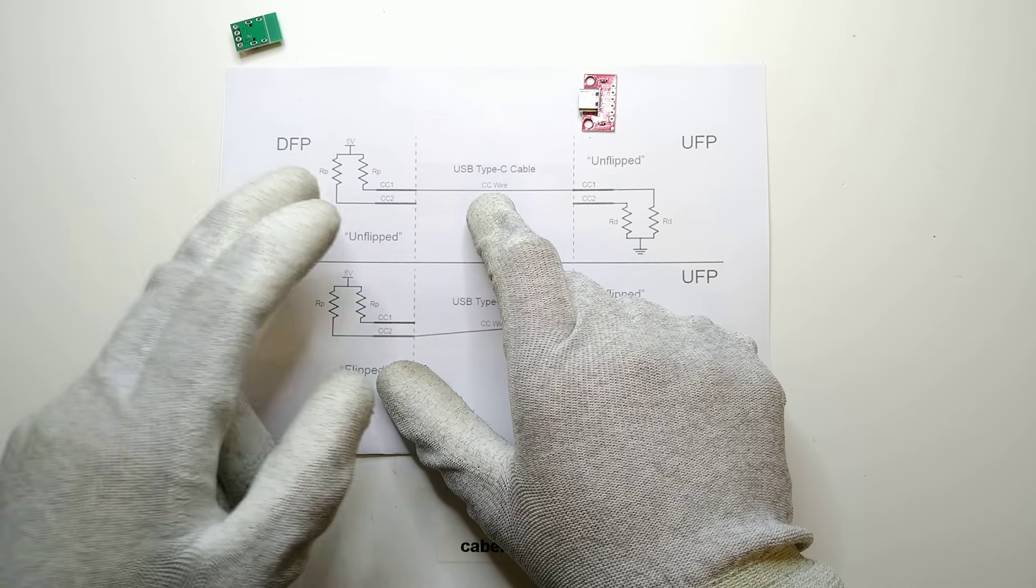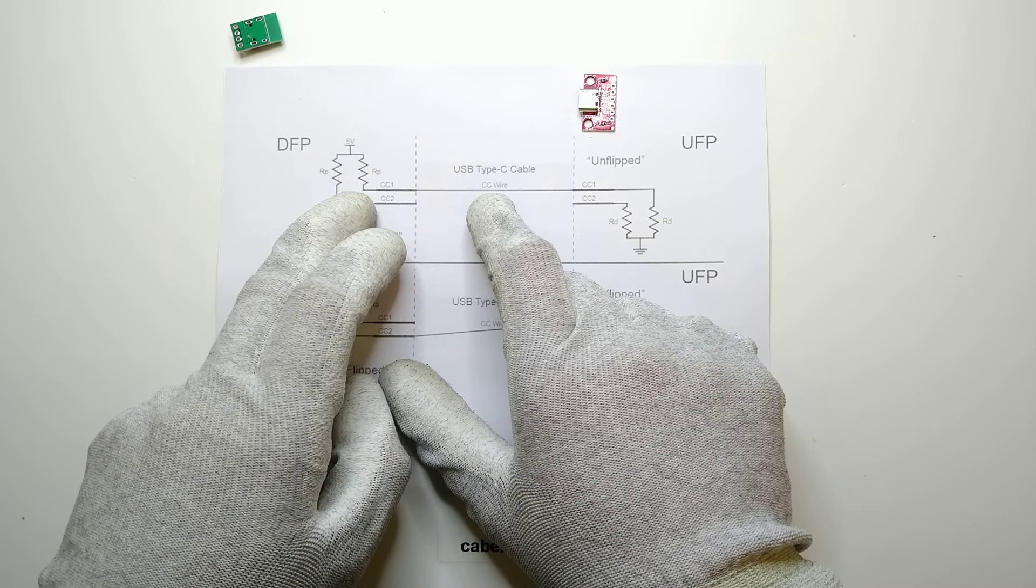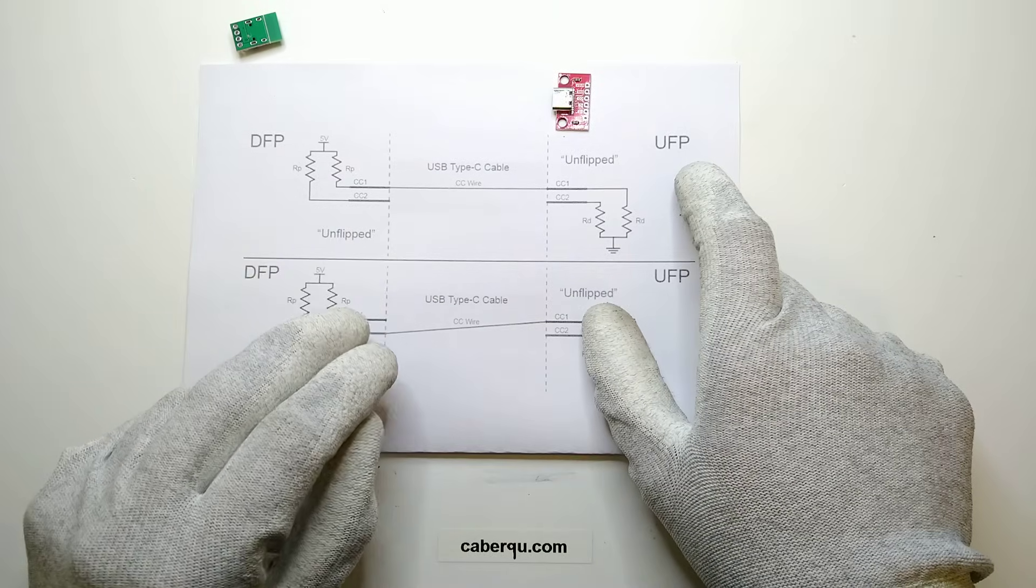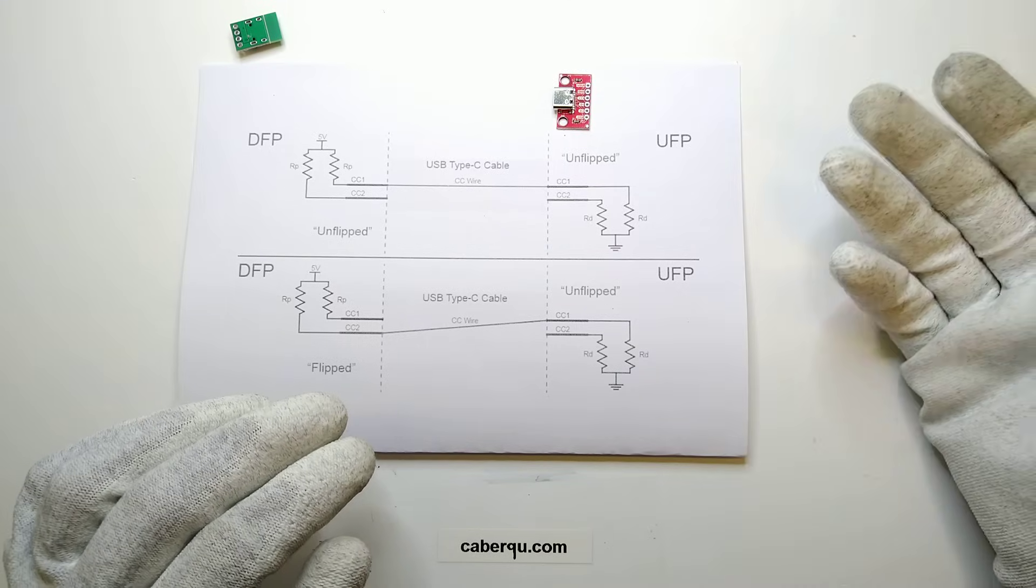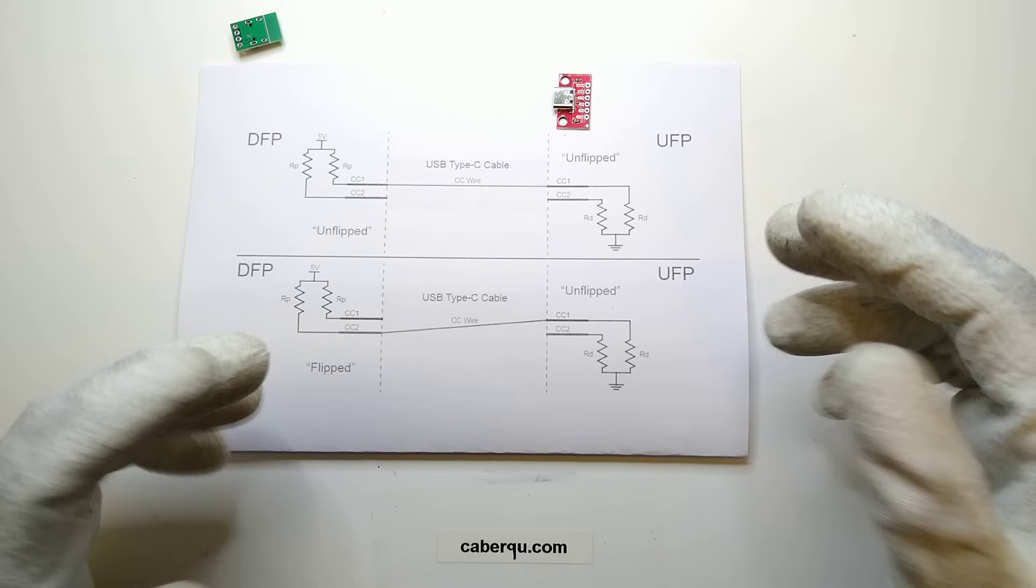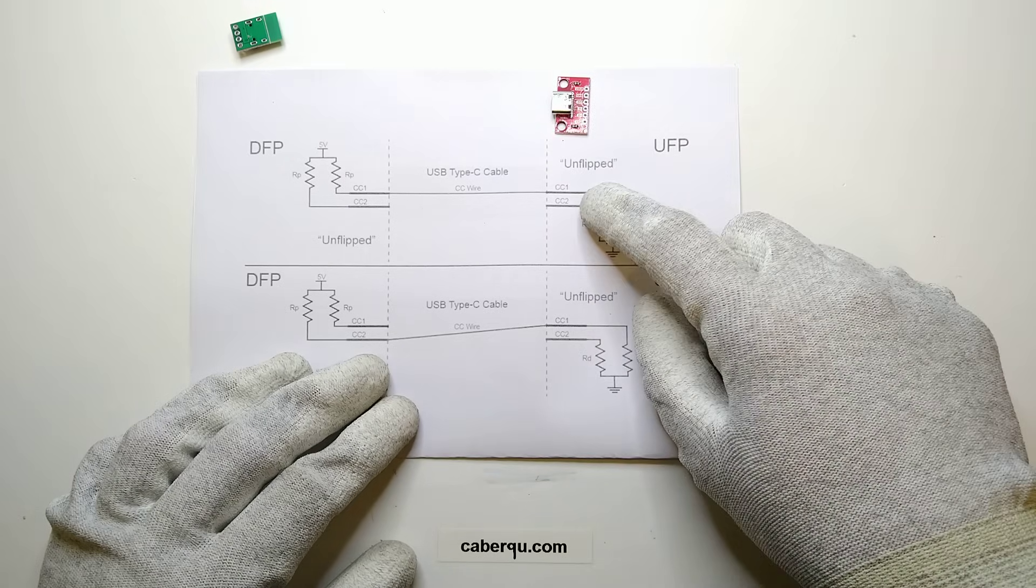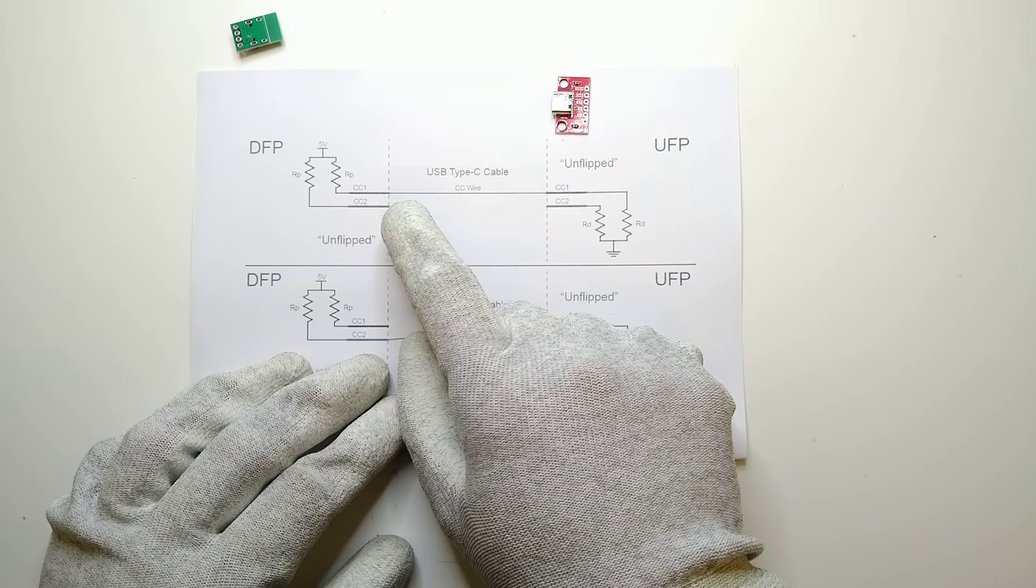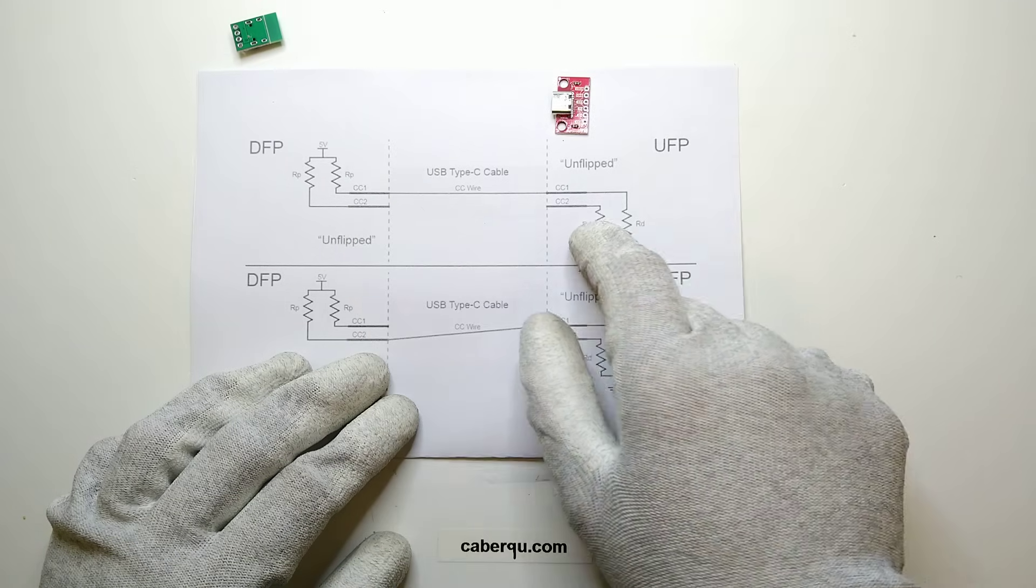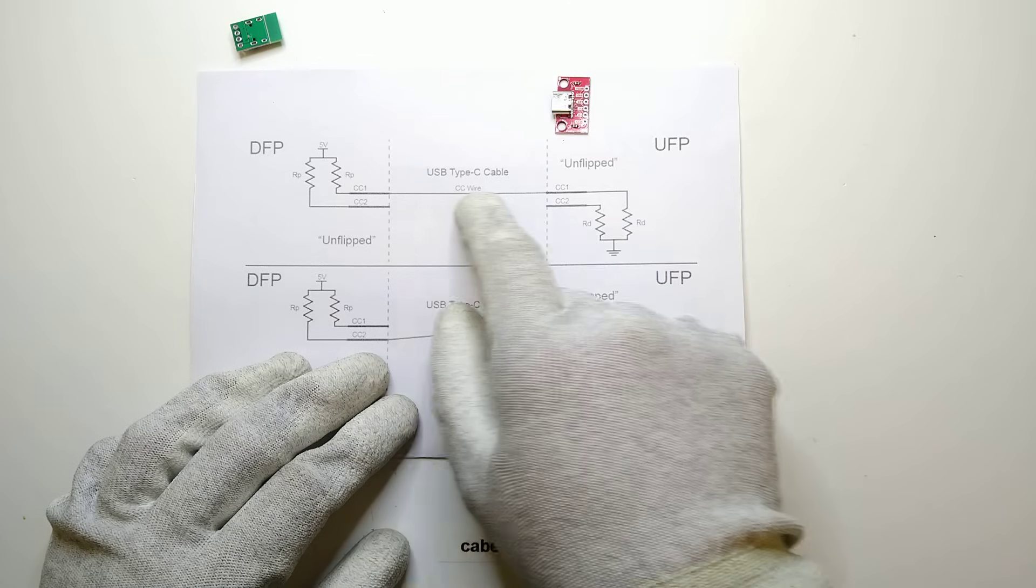So that the charger, which is called the downstream facing port, can use those CC1 and CC2 to pull them up to five volts with an internal resistance. And the upstream facing port, this is normally the device you're charging—your phone, your action cam, whatever—has to pull down resistors so they are pulling the CC pins both down to ground. And once you connect your downstream facing port to your upstream facing port via this USB C cable, one of the CC pins is going to get connected with the CC wire.